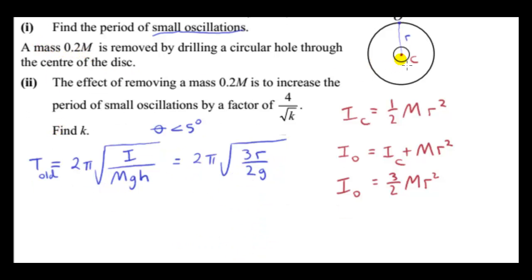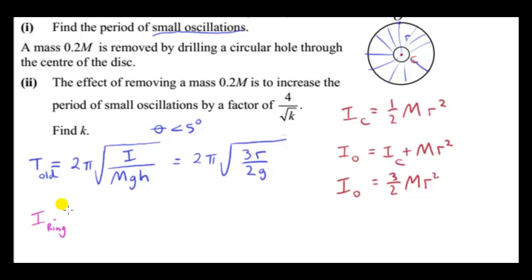In part 2, we have a hole drilled in the center of the disk. This hole has the same center as the overall disk, and its mass is 0.2 of the total mass of the disk. We want the period of oscillation of this new ring-shaped object. We need the moment of inertia of this ring, starting with the moment about point C, then using the parallel axis theorem to get the moment about point O.